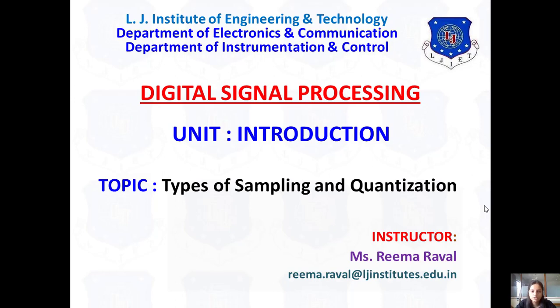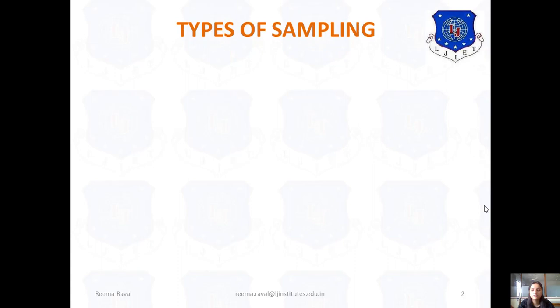Hello and welcome to digital signal processing online. In today's session we are going to conduct unit number one: introduction, and today's topic is types of sampling and quantization. In the previous lecture we covered the sampling theorem — what sampling is and why it is required — and we know that to convert any analog signal into digital form the first step is sampling. So now let us see the different types of sampling.